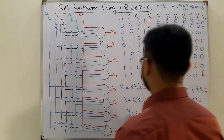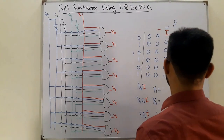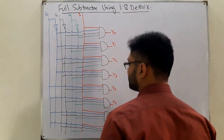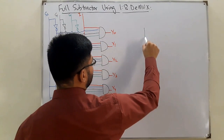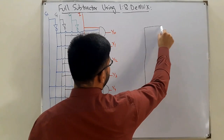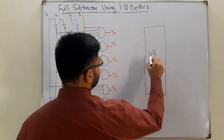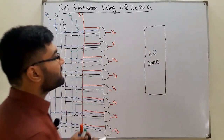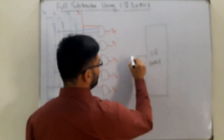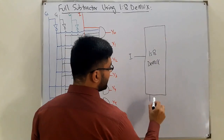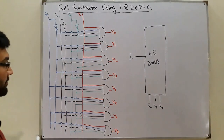Now I remove that part and draw the full subtractor. This is a 1×8 D multiplexer block with its internal circuitry. The input I comes in here, and we have three select lines S2, S1, and S0.